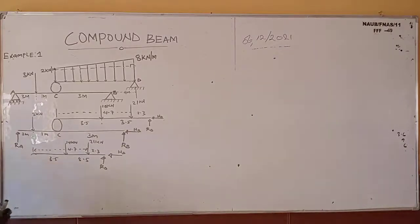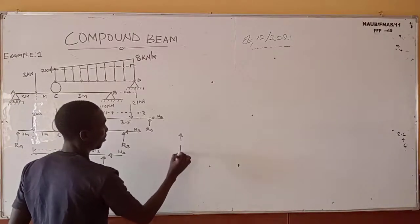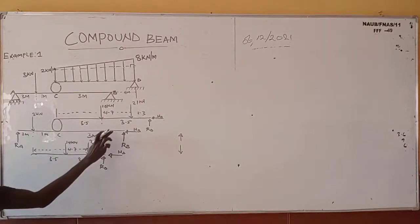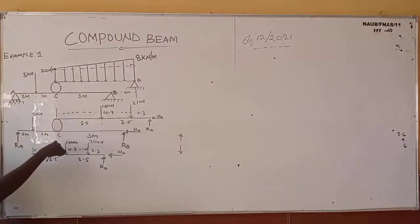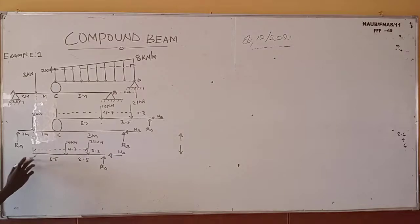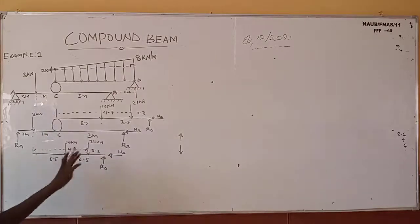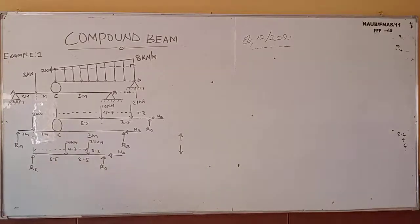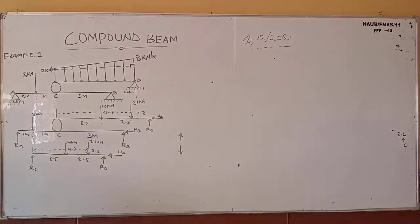If you pick upward first for ROC and get a positive answer, the assumption is correct. If negative, the direction should be reversed. So I'm going to pick upward first for ROC. Now, taking summation of horizontal forces equals zero: we have minus HD equals zero, so HD equals zero.